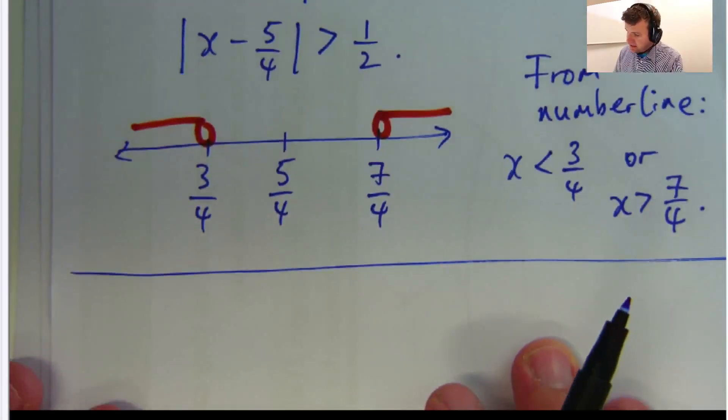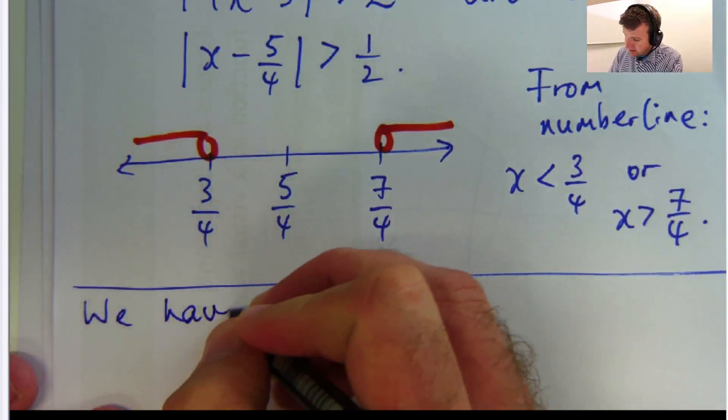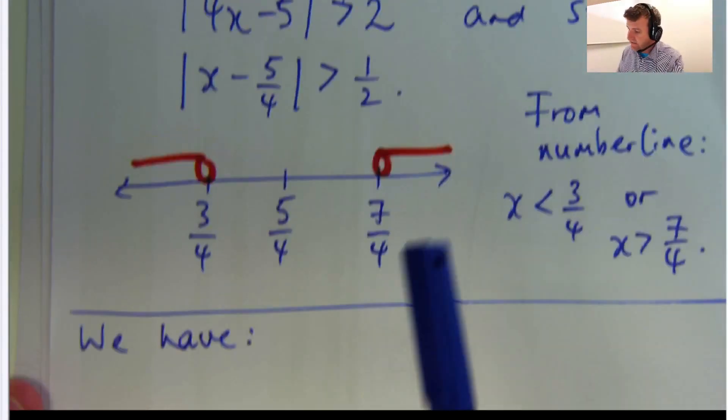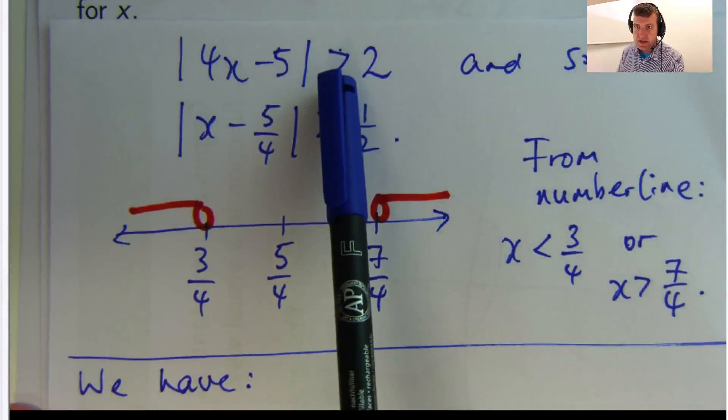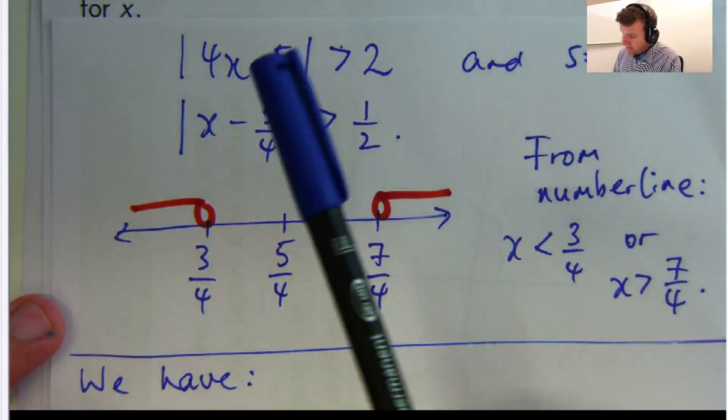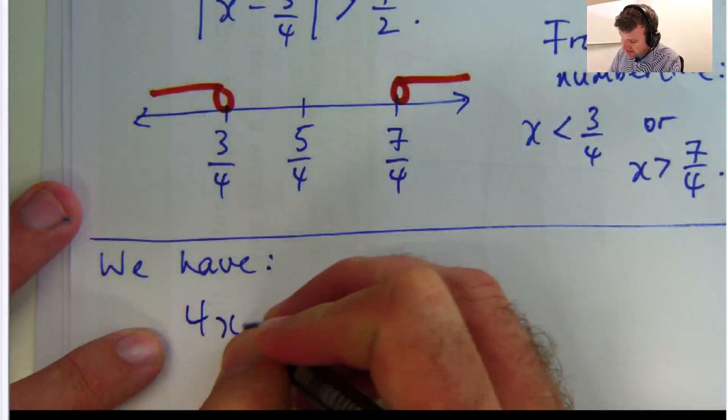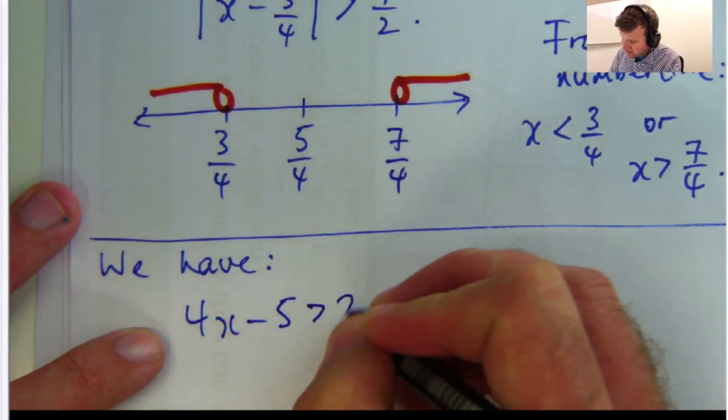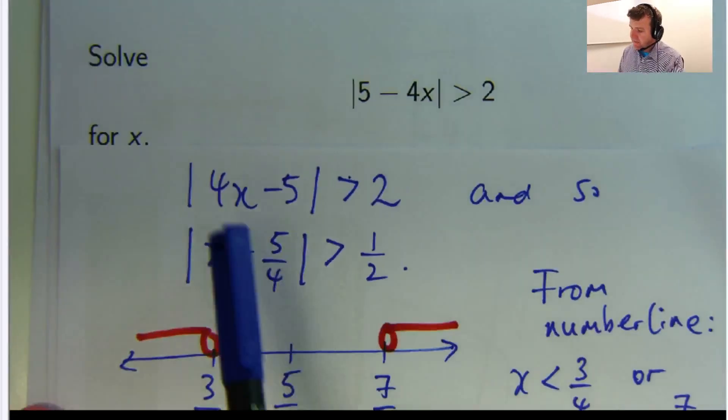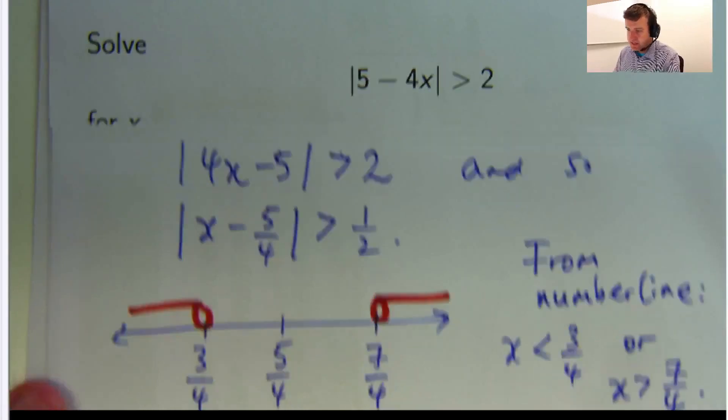Okay, so let's start here. Now the tricky way about this, if this was a less than sign here, you could combine what we're doing, but we can't. So we need to form sort of two lines of attack here. So we have 4x minus 5 greater than 2, or 4x minus 5 less than negative 2. Okay, that's how you do it.